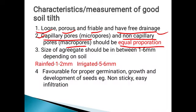The size of the aggregate should be between 1 to 6 mm depending on the soil. In rain-fed conditions, aggregate size should be 1 to 2 mm, and in irrigated conditions, 5 to 6 mm. Aggregates are formed when soil particles come together.